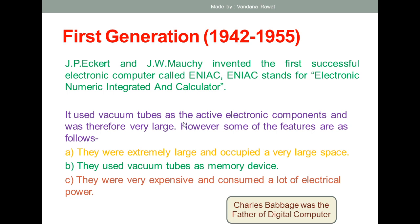Obviously the technology changes from generation to generation. As the size of vacuum tubes was very large, the size of the computer was obviously very large, because not just one single vacuum tube but a number of vacuum tubes were used within a single computer. The first feature of these computers is that they are extremely large, occupying very large space. Vacuum tubes were used both as the technology and for memory devices.